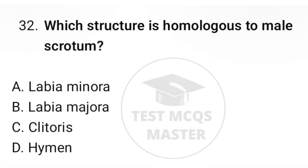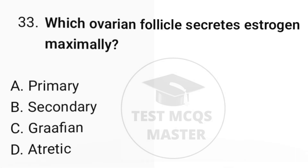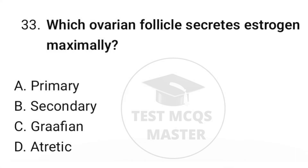Question number thirty-two: which structure is homologous to the male scrotum? The correct option is B, labia majora. Question number thirty-three: which follicle produces estrogen maximally? The correct option is C, Graafian follicle.